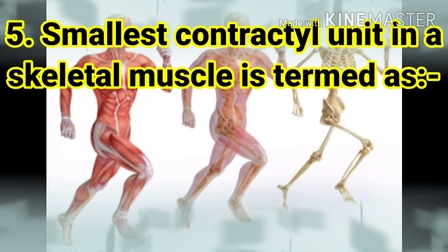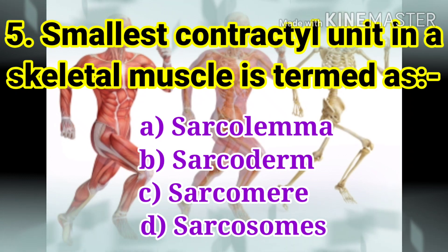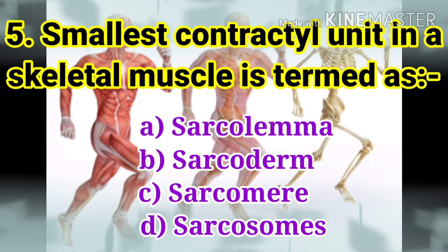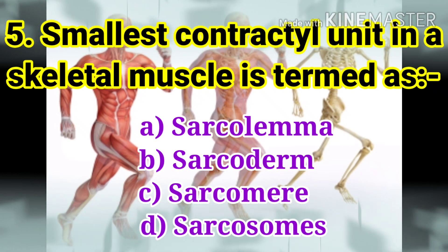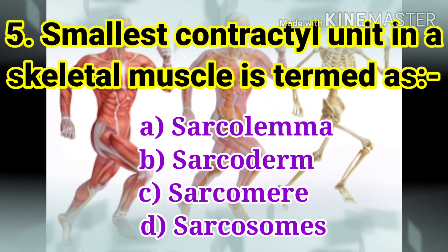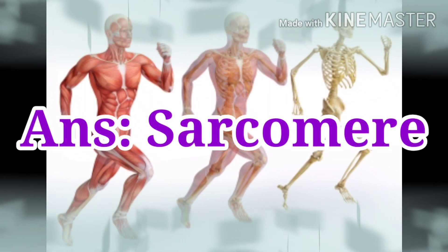The next question: the smallest contractile unit in a skeletal muscle is termed as. The options are sarcolemma, sarcoderm, sarcomere, and sarcosome. The answer is sarcomere.